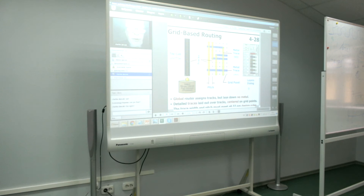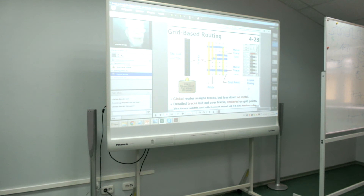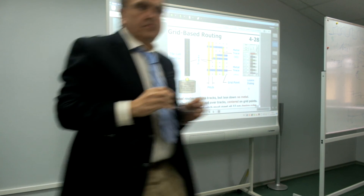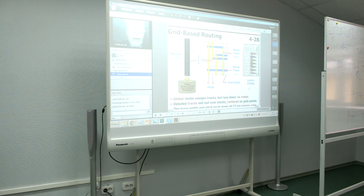We're now about to go over into detail routing. In the global route phase, the entire logic core is conceptually divided into routing tiles — this is ICC-specific, but most other tools use a similar concept. For simplicity, we'll stick to two levels of metal: metal one, shown in blue, with preferred horizontal direction, and metal two, shown in yellow.